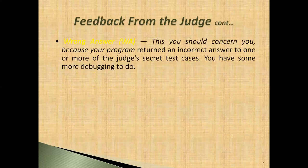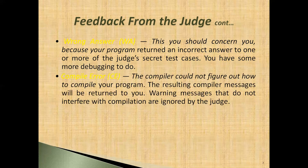Next is Wrong Answer, abbreviated as WA. This is something you should be seriously concerned about, because your program returned an incorrect answer to one or more of the judge's secret test cases. In any of these tests, if it fails, the feedback will come as Wrong Answer — you have more debugging to do to find the errors within your program.